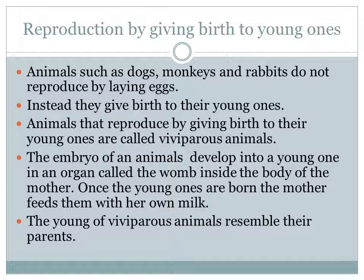Once the young ones are born, the mother feeds them with her own milk. In viviparous animals, they develop in the womb — an organ present in the female's body. Once they are born, the mother feeds them with her own milk. These animals resemble their parents exactly; they look like their parents.